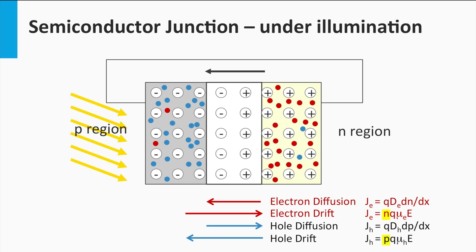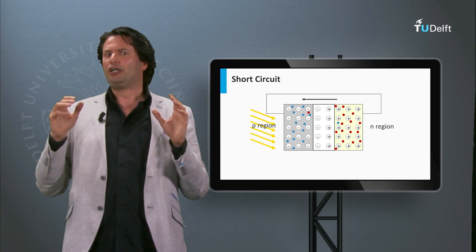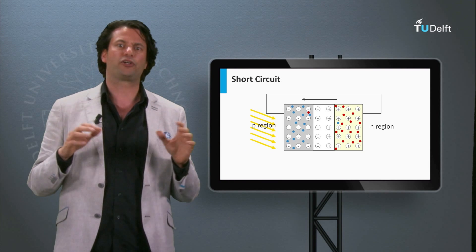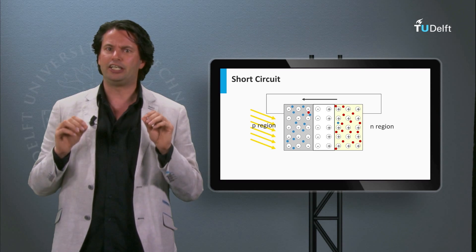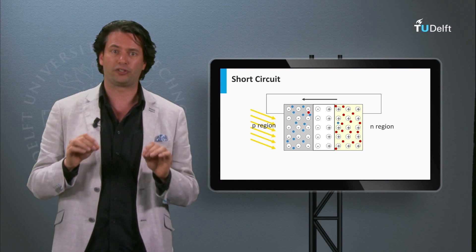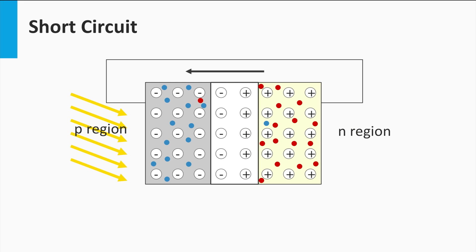By illuminating a p-n junction we can generate a current. Using an electrical circuit we connect the contact at the p-doped silicon with that of the n-doped silicon — in other words we short-circuit the p-n junction. In this condition the illuminated p-n junction will produce only an electrical current, called the short-circuit current of a solar cell. On average a minority electron will drift to the n-type material and diffuse to the metal contact where the electron is injected. The electron moves to the contact at the p-side and is injected into the p-type silicon, where it quickly recombines with a hole. The minority holes in the p-type drift across the depletion zone and diffuse to the back contact to recombine with the electron.